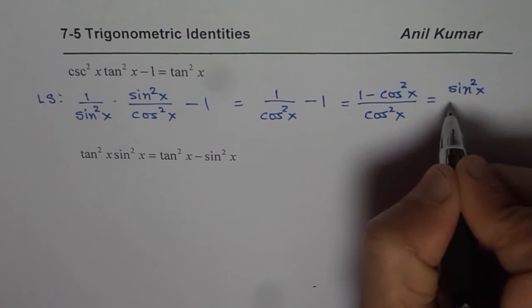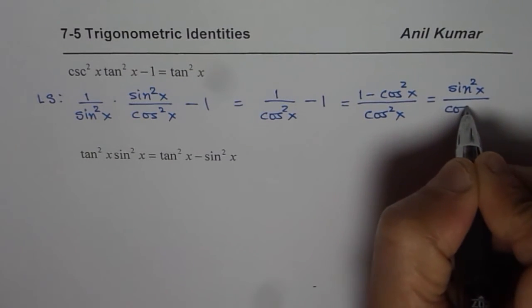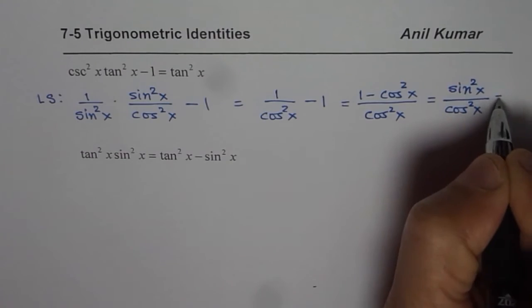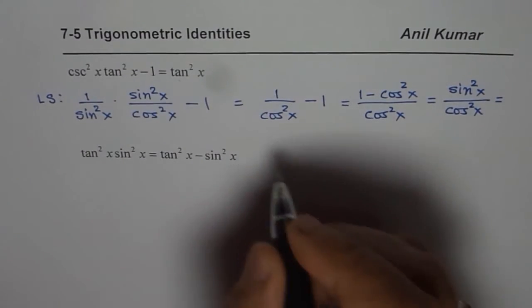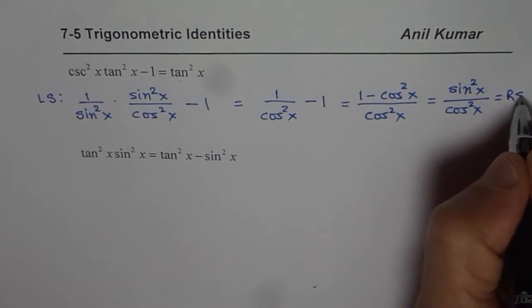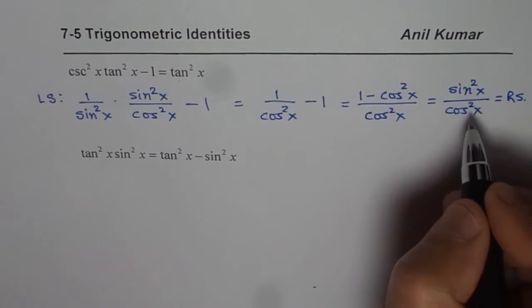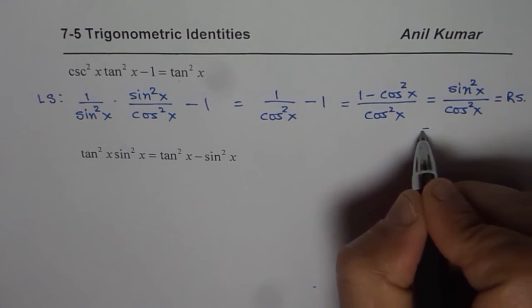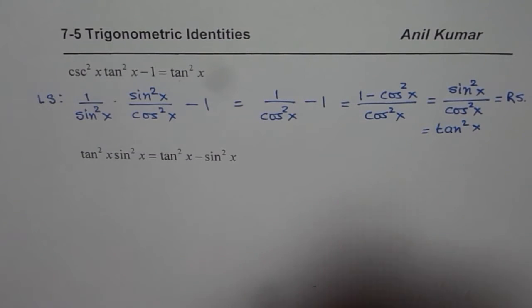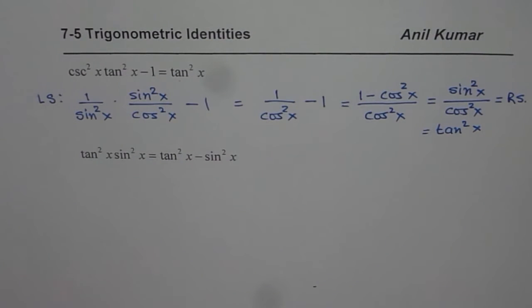So we have sin square x divided by cos square x which is indeed equals to right hand side which is tan square x. So sin square x over cos square x is tan square x. So that is how we can actually prove left side to right side.